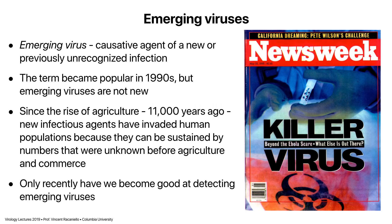Emerging viruses are not new. Viruses have been emerging since the advent of agriculture, which allowed people to begin to congregate in cities in bigger and bigger numbers. Before that it was not sustainable, and we started to get infections transmitted amongst us because previously we were in small communities, which made transmission harder. Emerging viruses were probably going on before that too, among ancient hominids and their ancestors.